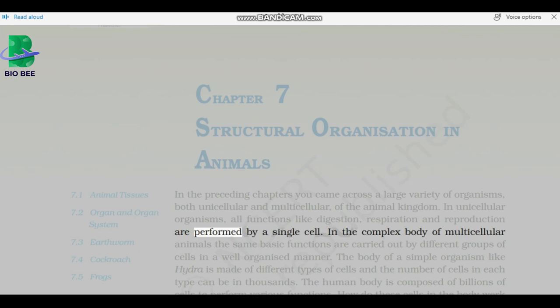In the complex body of multicellular animals, the same basic functions are carried out by different groups of cells in a well-organized manner. The body of a simple organism like hydra is made of different types of cells, and the number of cells in each type can be in thousands.